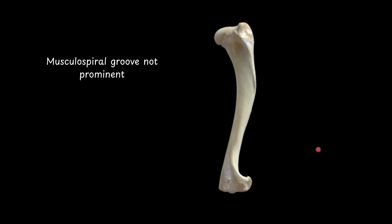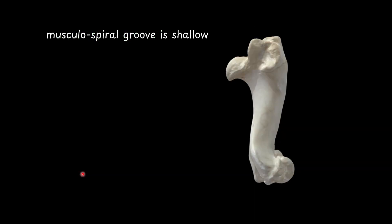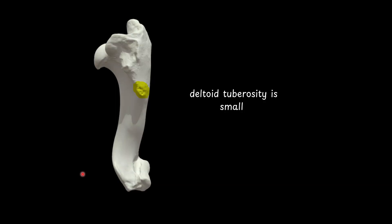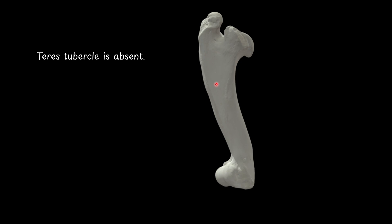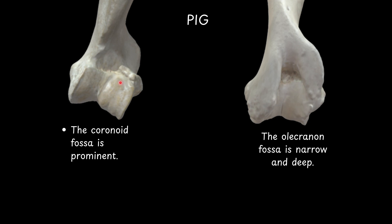Humerus of pig: it has the appearance of the italic letter F minus the cross bar. The musculospiral groove is shallow. The condyles are of equal size. The deltoid tuberosity is small. The teres tubercle is absent. Occasionally, the supratrochlear foramen is found, similar to the dog. The coronoid fossa is prominent, and the olecranon fossa is narrow and deep.